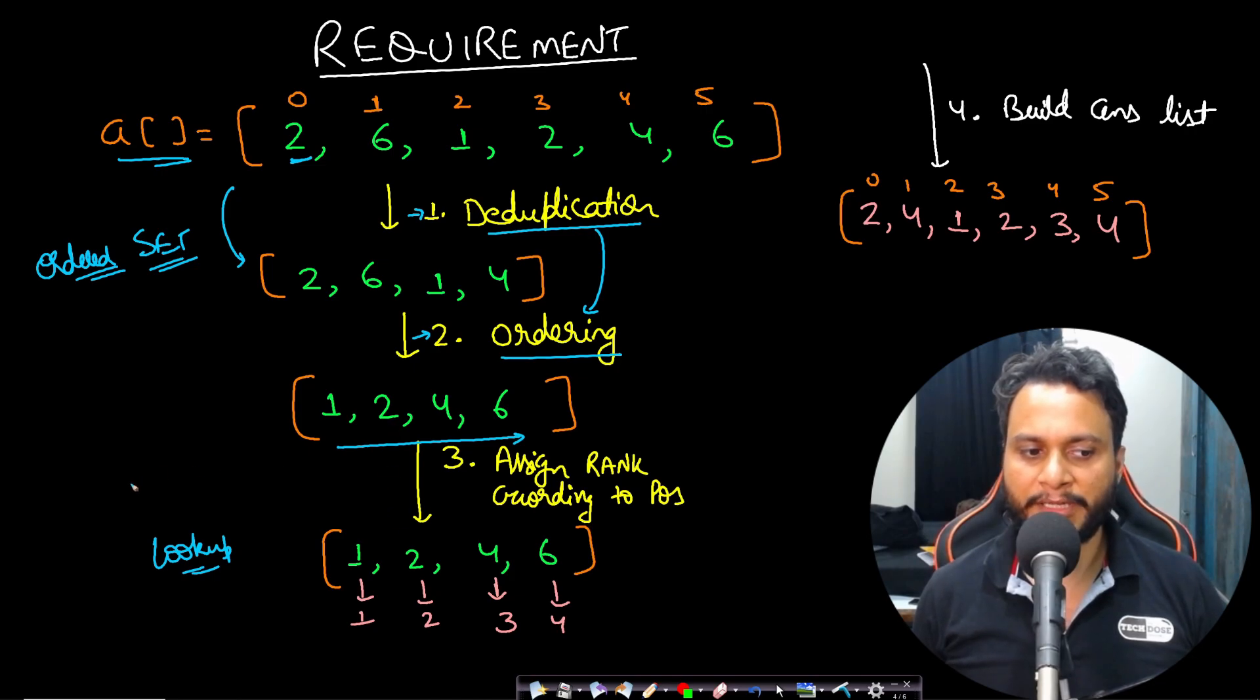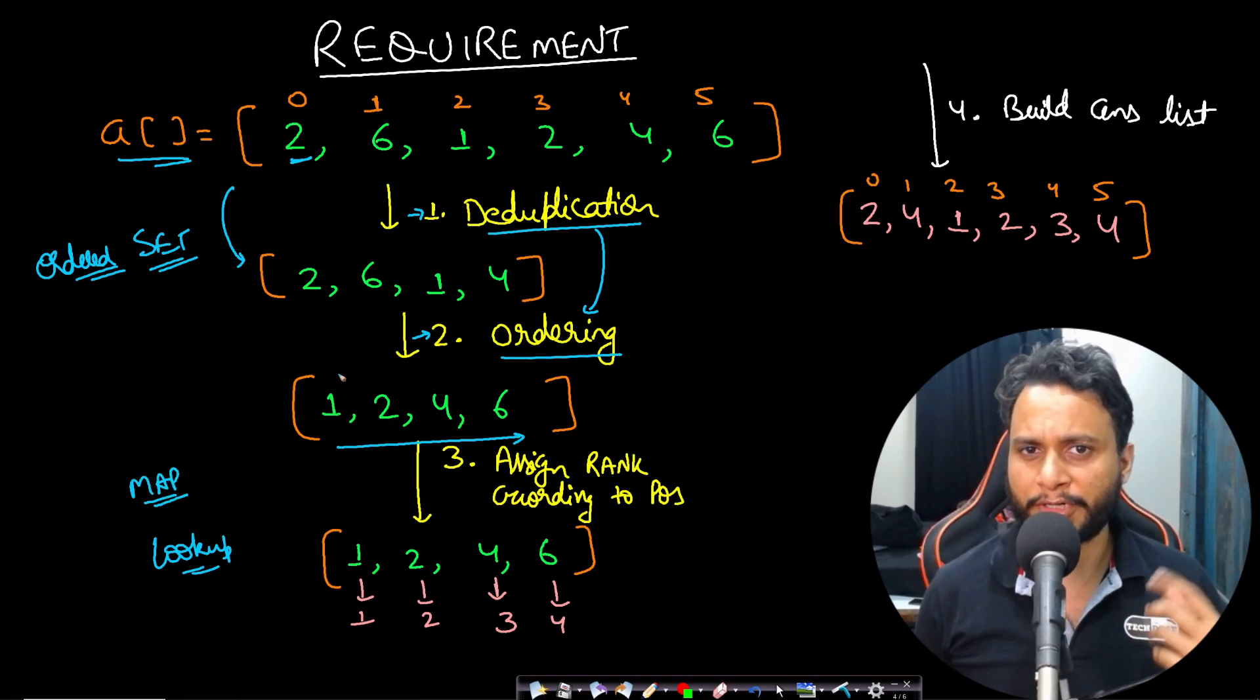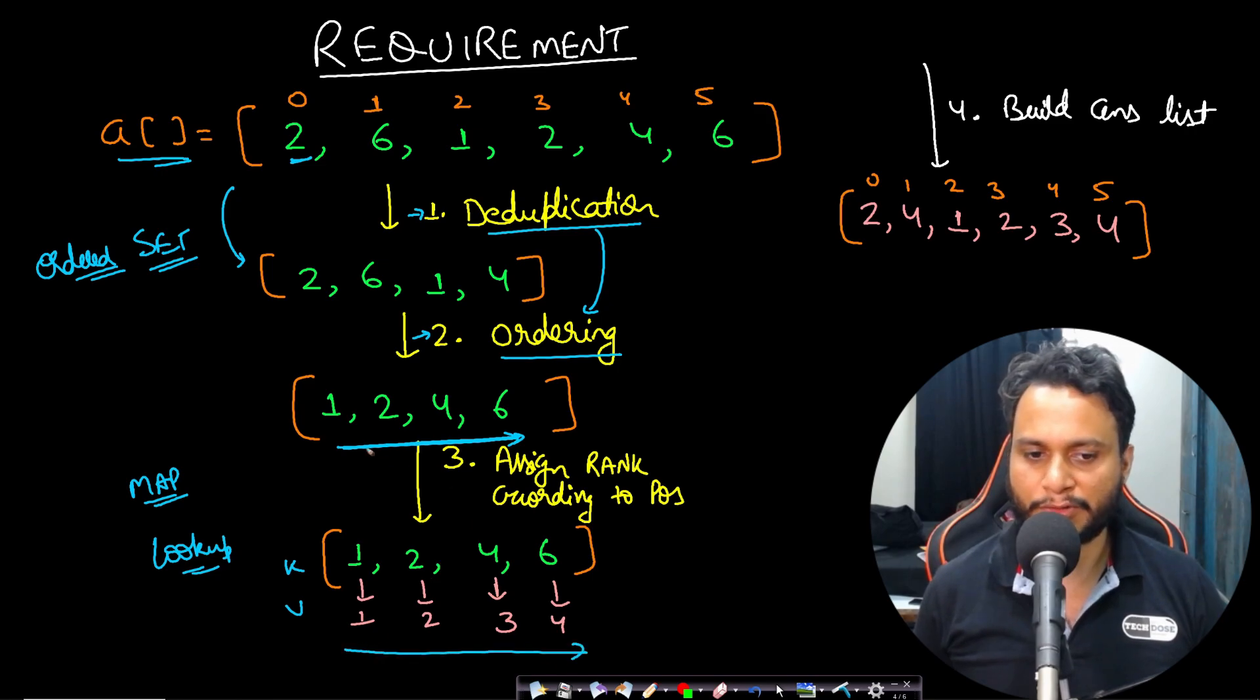So for that reason, we will be taking a map. You can take either ordered or unordered map. But my main goal is to create a key-value pair in such a way that the key is the item and then the value is the associated rank. So we can just iterate through the set and build the KV pair.